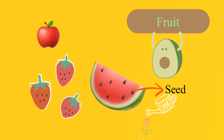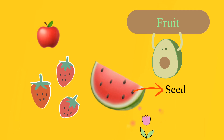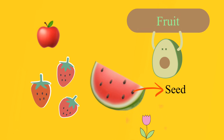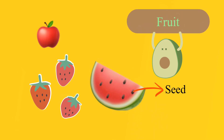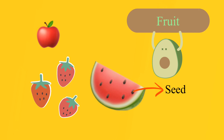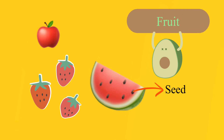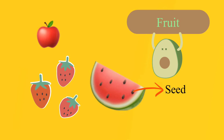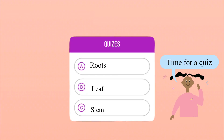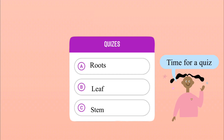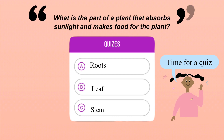Fruits have seeds in them, and when we sow the seeds and regularly water them, we can grow a new plant. Fruits like apples are also very healthy, and we should eat fruits every day to be strong.